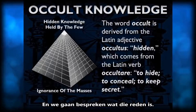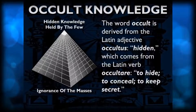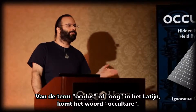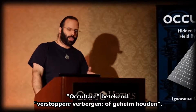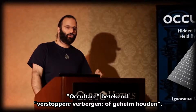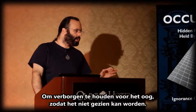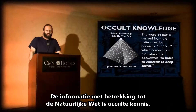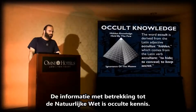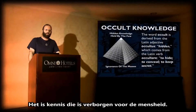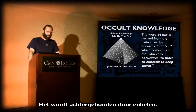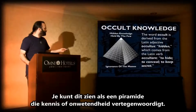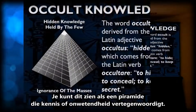And we're going to get into what that reason is. From the term oculus, or eye in Latin, comes the verb occultare. Occultare means to hide, to conceal, or to keep secret — to keep hidden from the eye so that it cannot be seen. The information regarding natural law is occulted knowledge; it is knowledge that has been hidden from humanity. It's held by the few, which is represented here at the top of this pyramid. You can look at this as a pyramid representing knowledge or ignorance.